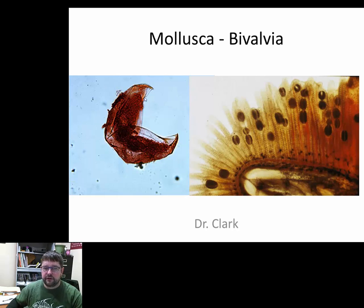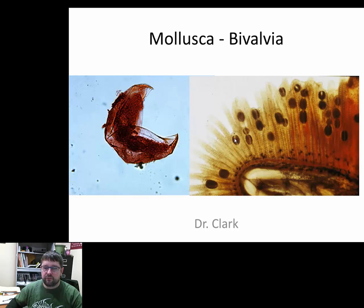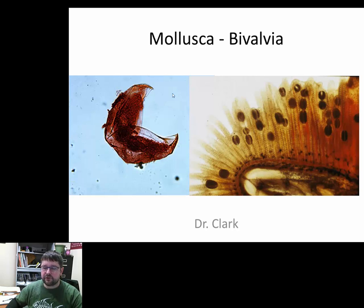This is called glochidia. Glochidia is the parasitic larval stage of freshwater mussels. The purpose of these larvae is to attach to the gills of fish and hitch a ride through the environment while parasitizing the fish — consuming blood and so on — until they get old enough to fall off or be dislodged, at which point they change into an adult form.